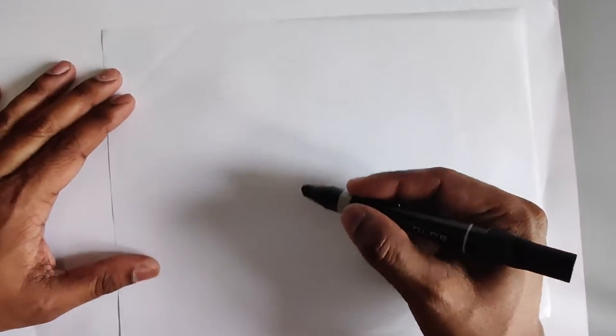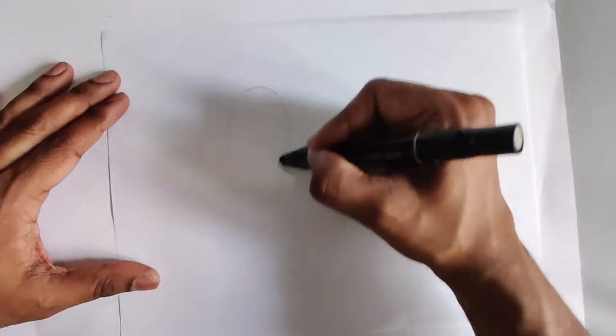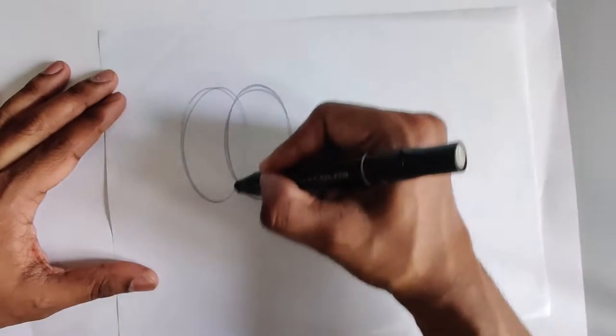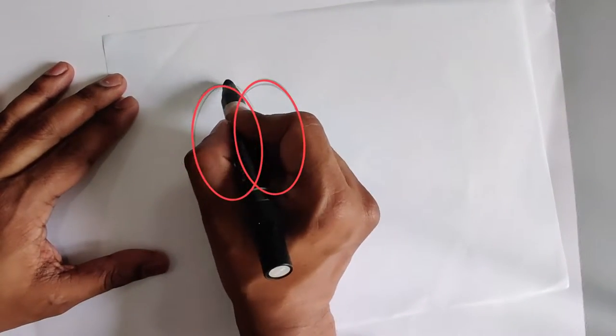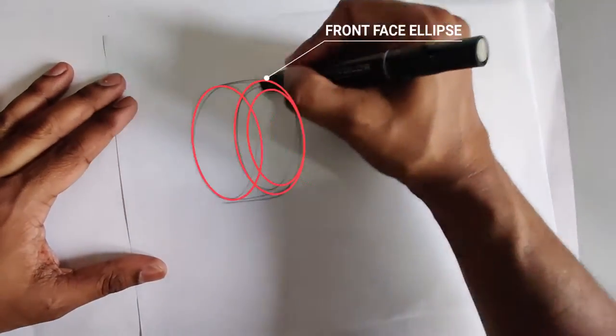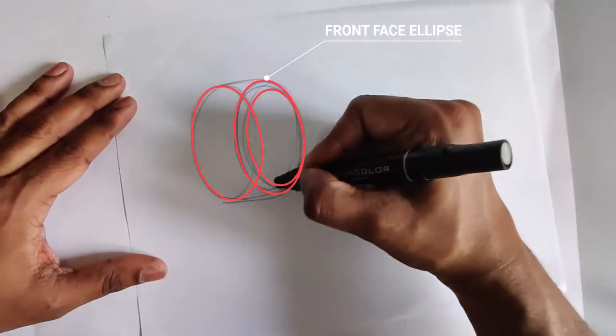I've got a front ellipse here and then one here at the back. And then I'm going to draw another ellipse right next to it, which is just offset and just smaller in size. Then we'll draw a curve in the top and the bottom to volumize it like a cylinder.